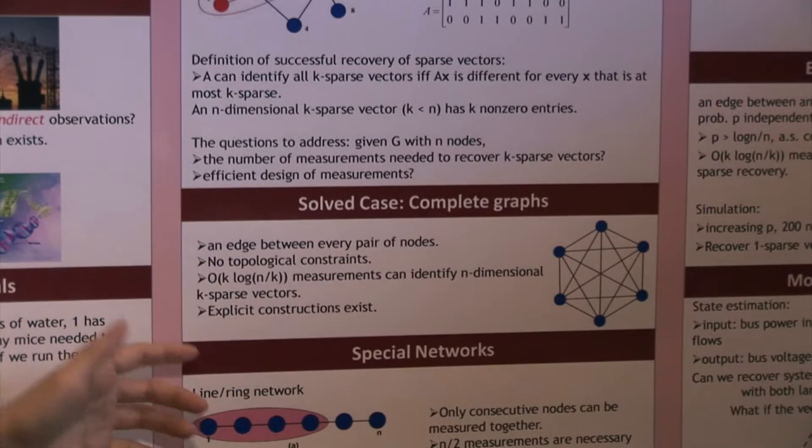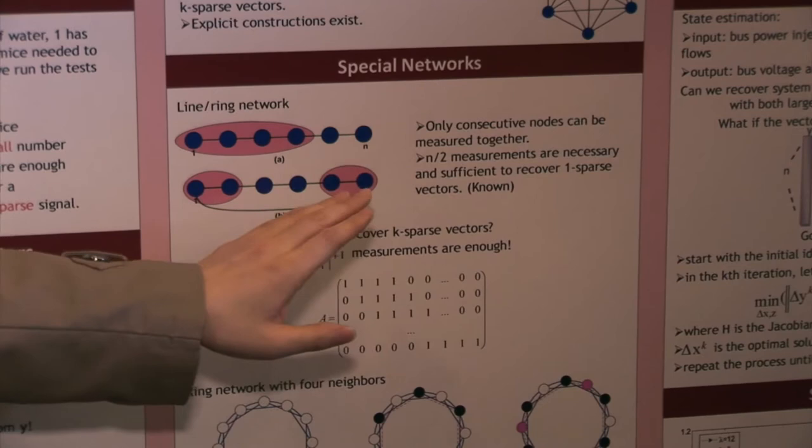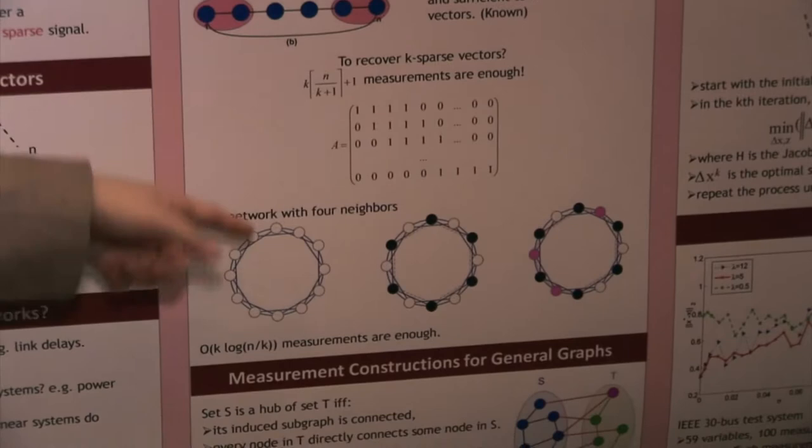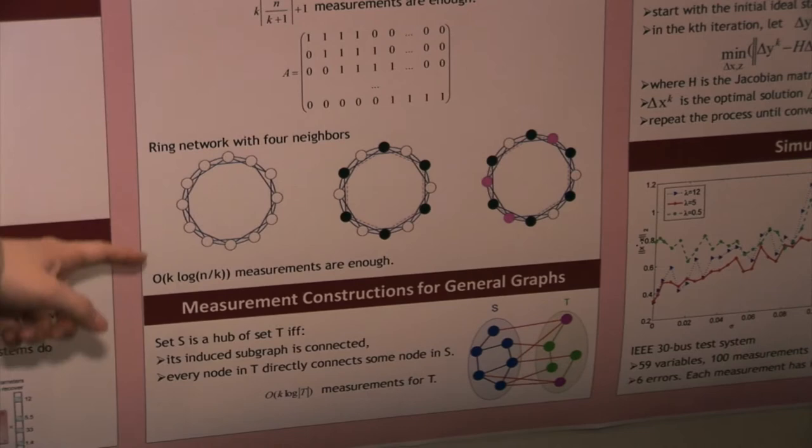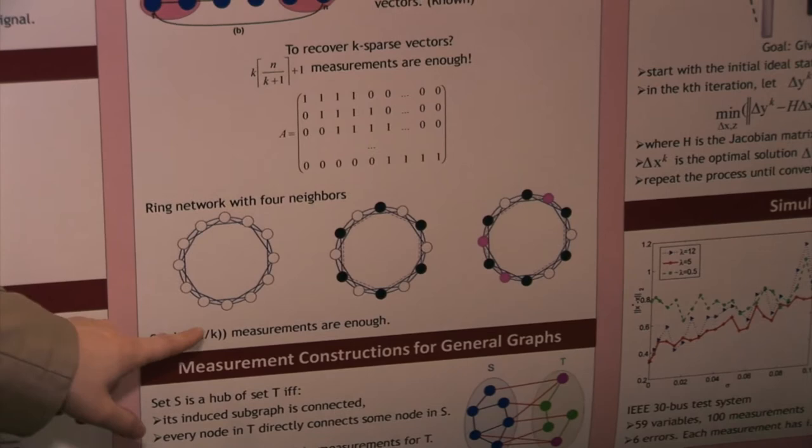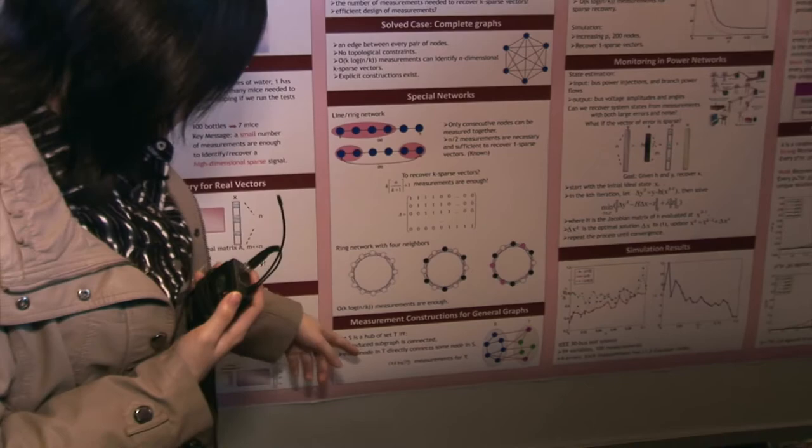So the key idea is, if the graph topology is very limited, like here, you only do measure consecutive nodes, then you need all the M measurements. However, what we are trying to say is, you only add a small number of links to this network. For example, if you compare these two kind of networks, the number of links doesn't increase too much. You can still significantly reduce the number of measurements from order n to order log n. And this order log n is already the best we can do, because in the complete graph where every node is connected to every node, the best you can do is order log n.